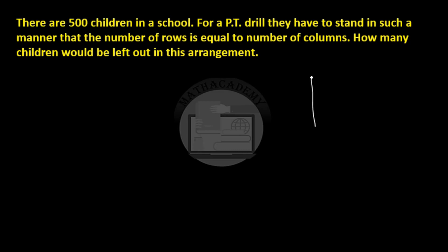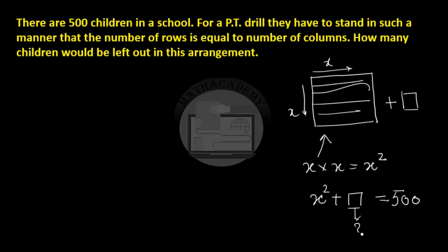So if our arrangement is where the number of rows—these are the rows—suppose there are x rows and there are x columns, the total number which will be fitting in this arrangement is x times x which is x square. And apart from this, how many students are left out we have to find out. So x square plus the students that are left out is equal to the total number of children in the school which is 500. We have to find out how many students are left out.